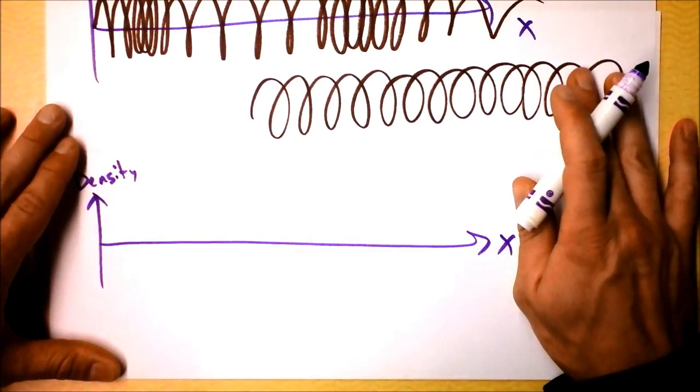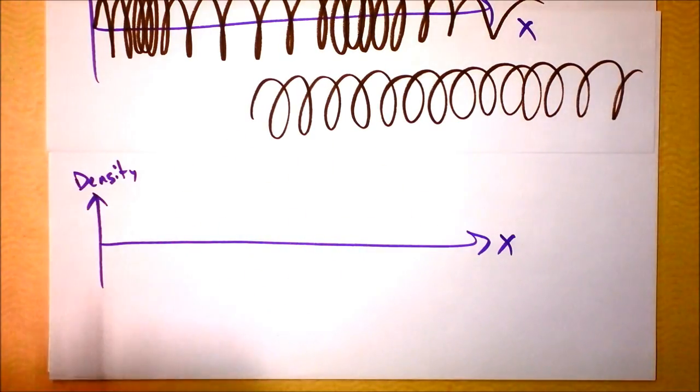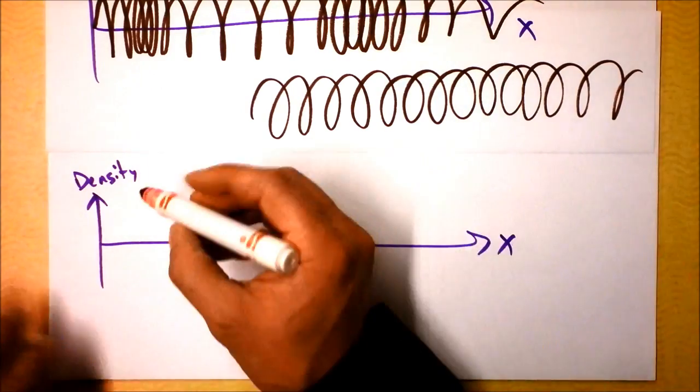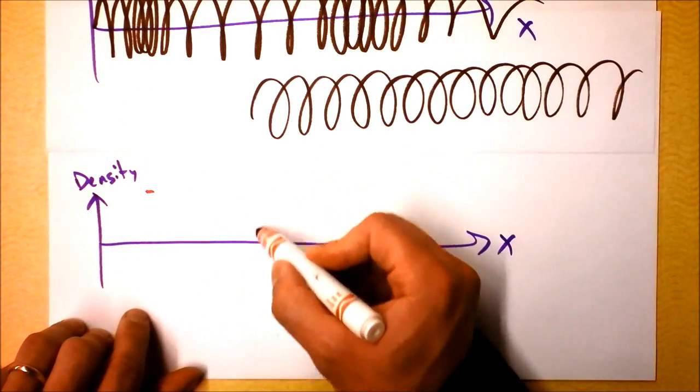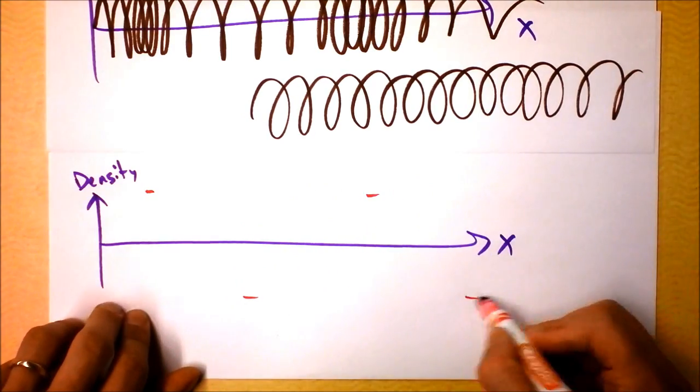And in that case, I'd have to say that the density is large. The density is large here, and the density is very small here. And the density is very large here, and the density is very small here.